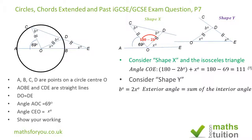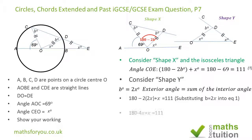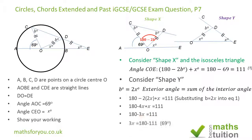Substituting b equals 2x into the equation, 2x replaces b. Expanding the brackets gives 180 minus 4x plus x equals 111 degrees. Simplifying: 180 minus 3x equals 111. Rearranging gives 3x equals 180 minus 111, which is 69, so x equals 23 degrees. Please check this as well to verify.